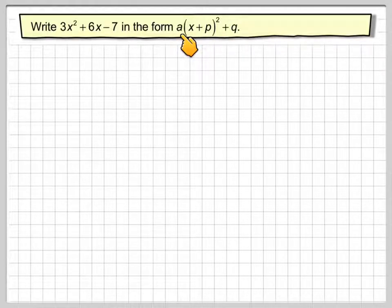Now up until now there's never been an a, a has been equal to 1. So what do we do when a is not equal to 1?